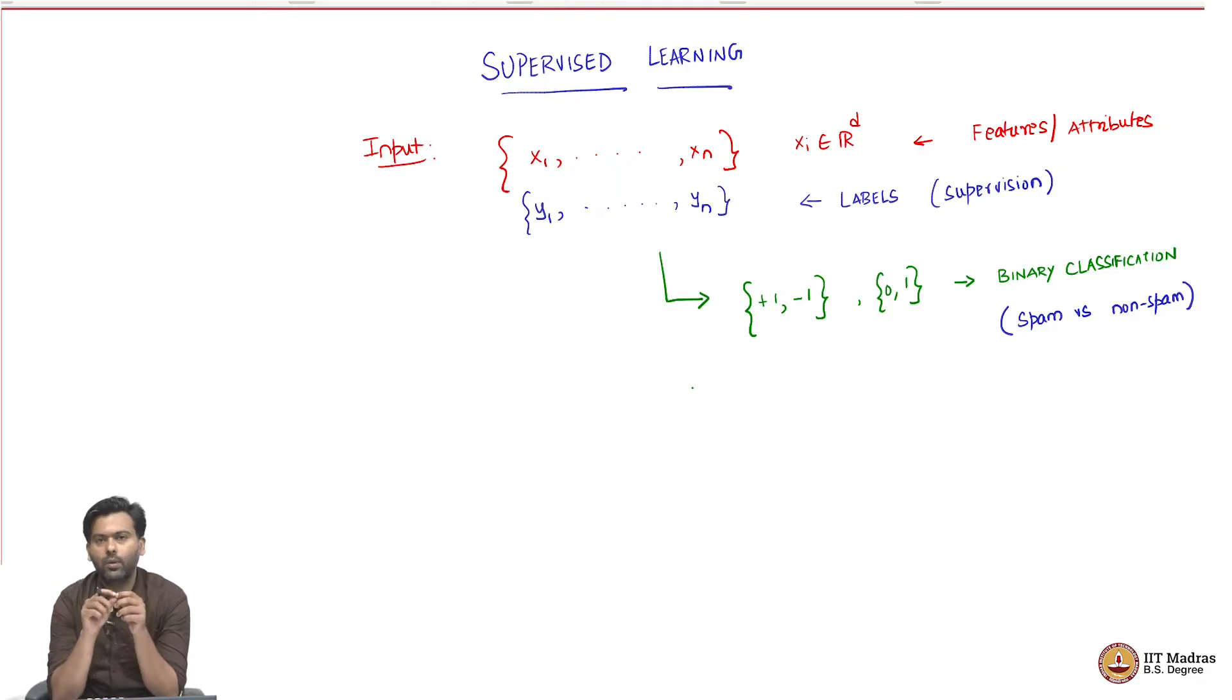Here, you somehow convert your emails into some features. We will talk about how to, what are good ways to do this later. But for now, assume that every email somehow has been converted into a bunch of numbers, which we are calling as features. Now, somebody comes and looks at these emails and tells us that some emails are spam, some emails are not spam. Now, this is our data set, where the spam or not spam classification of these emails are the labels associated, they are the y1 to yn.